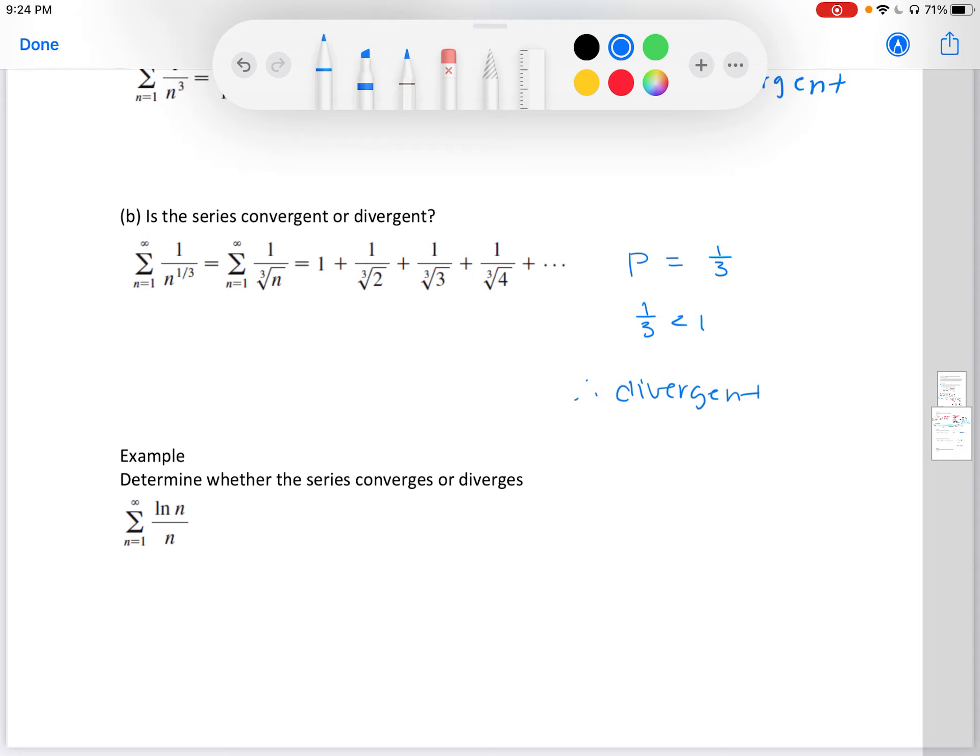One more example. Determine whether the series converges or diverges. Let's use the integral test from the beginning of the section. The limit as t is approaching infinity of the integral from 1 to t of ln(x) over x dx. If we integrate, we're left with ln(x) squared over 2. We're going to let x equal t and x equal 1. Don't forget your limit.